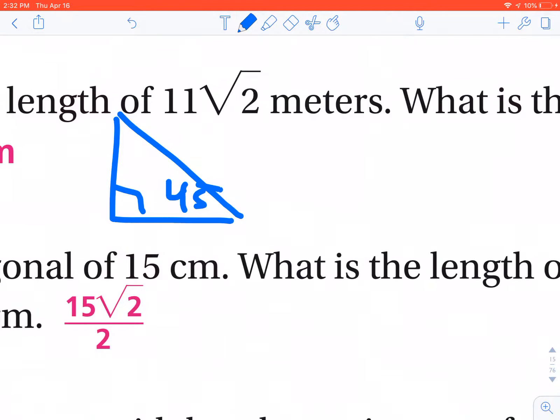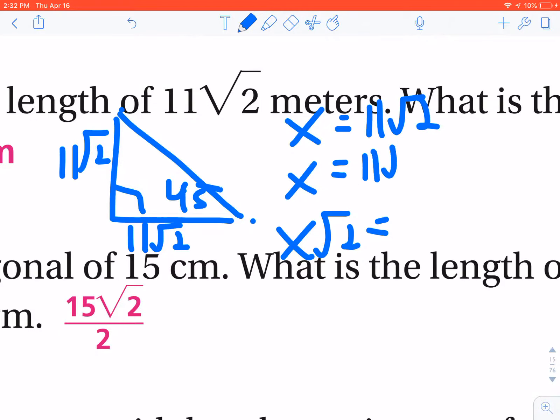I know that one of the legs, because if I were to continue to draw that square, the legs would be the side length, which is 11 radical 2. If we make our table: x, x, x radical 2, we know our legs, or our x's, are 11 radical 2.